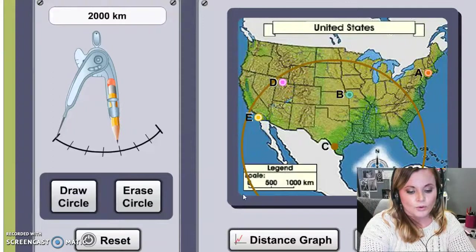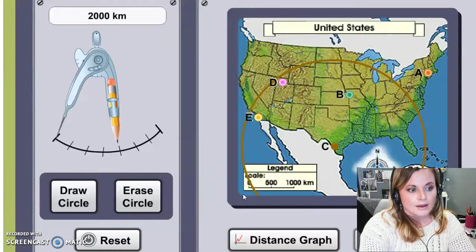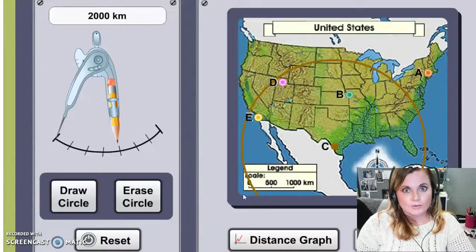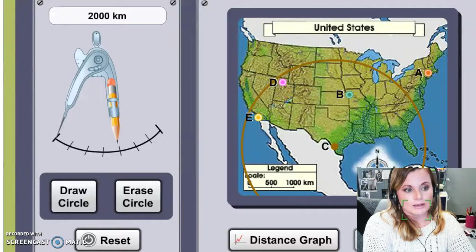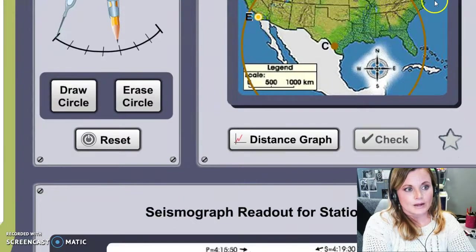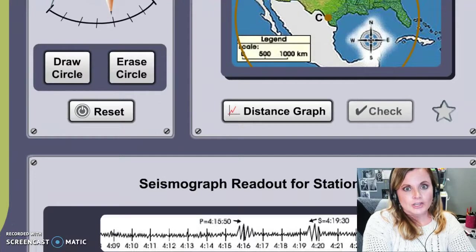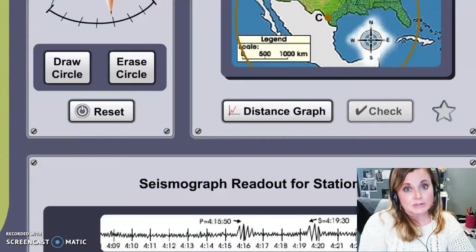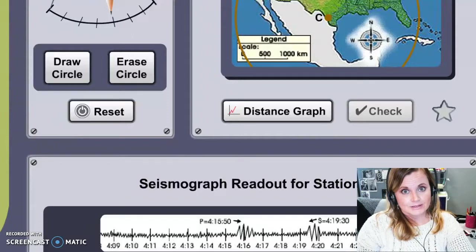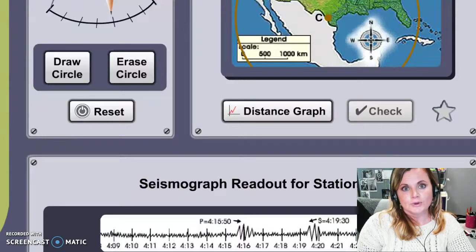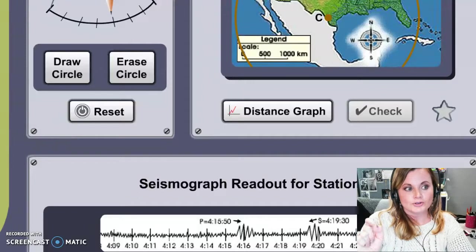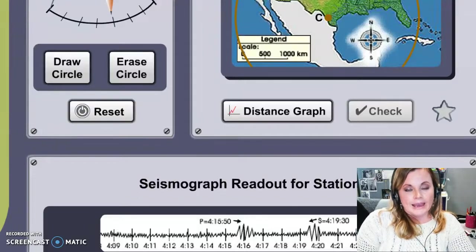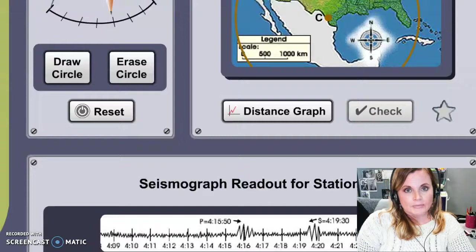And then you are going to do the same thing with two other cities. So you're going to have to read the seismogram, remember that you're scrolling down to get that seismogram reading, and you will have to determine the difference between the P waves and the S waves, and then you will have to use the compass to create the right width and draw it on the map.